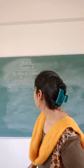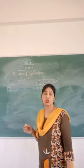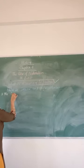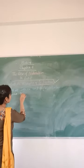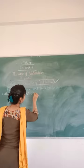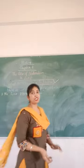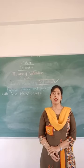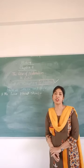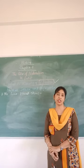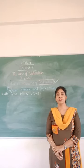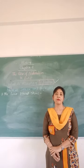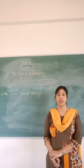So first, Frederic Sorrieu's first visualization — the first print source of the painting. The people of Europe and America are marching in a long train and offering homage to the Statue of Liberty as they pass by it. A female figure carries a torch of enlightenment in one hand and the Charter of the Rights of Man in the other hand.